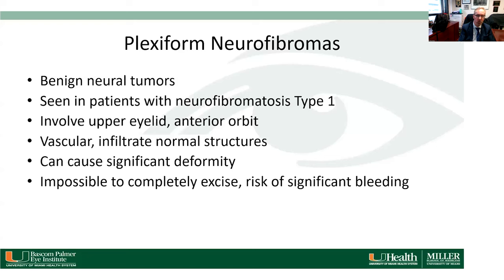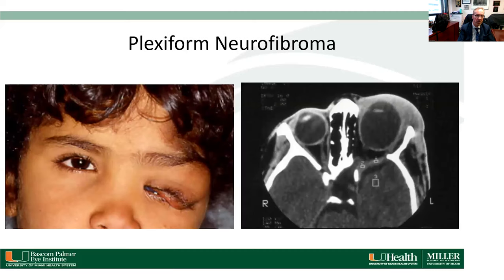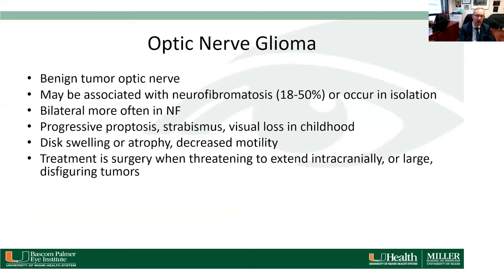Plexiform neurofibromas are benign neural tumors seen most commonly in neurofibromatosis type 1. They can involve the upper eyelid and anterior orbit. These are very infiltrative structures that can cause significant deformity and are impossible to completely excise. This young girl has a large plexiform neurofibroma with neurofibromatosis type 1 and a buphthalmic eye due to uveal neurofibroma. The tumor extends into the orbit and eyelid, and she has absence of the greater wing of the sphenoid.